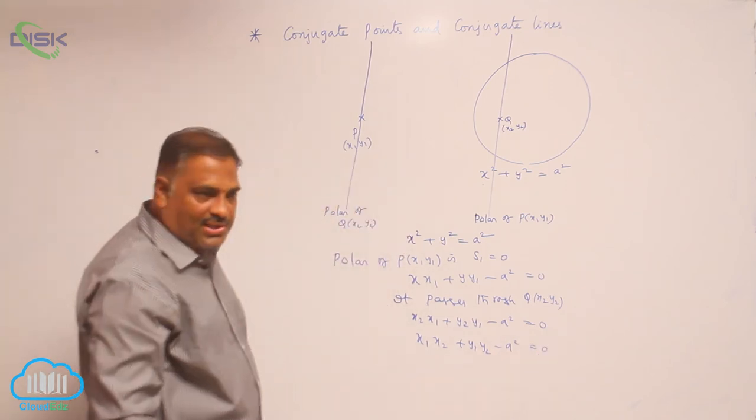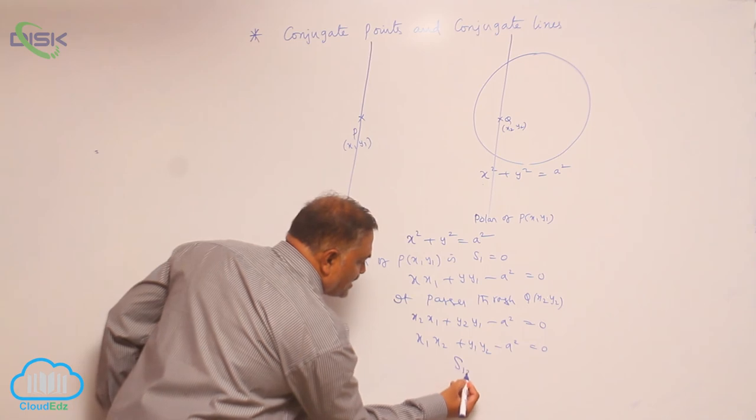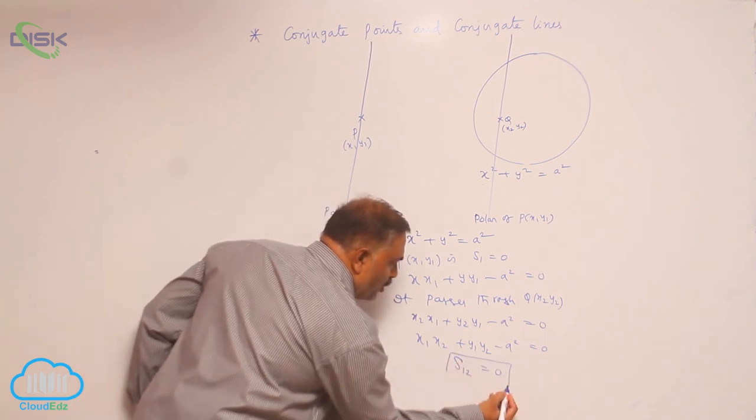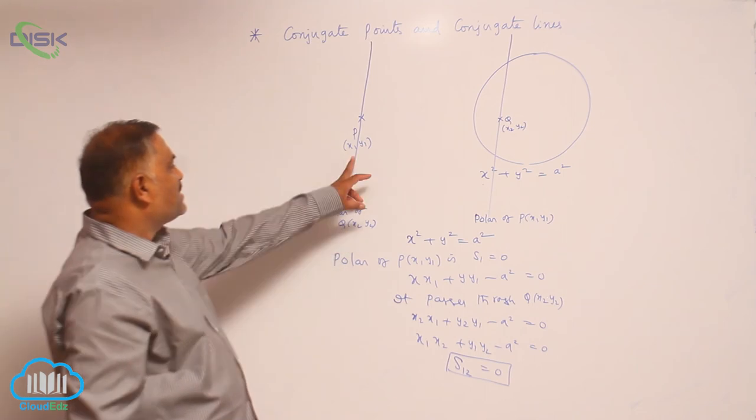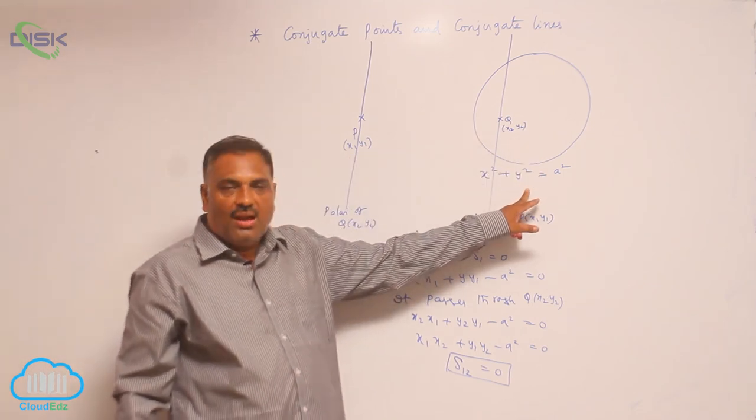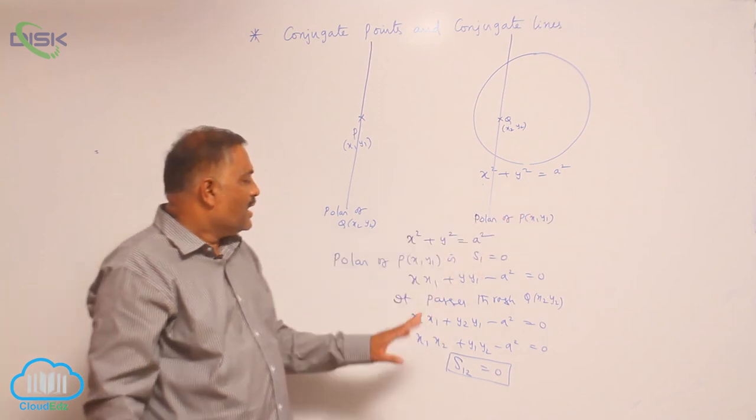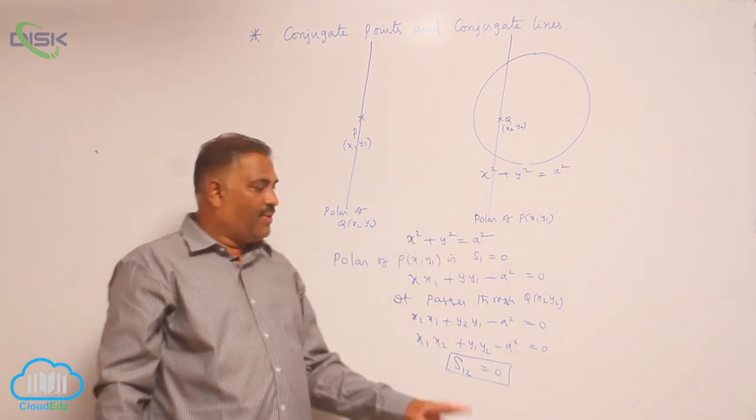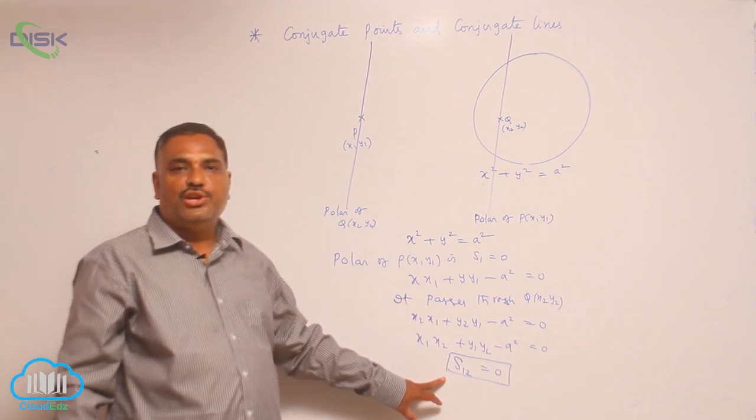As per the notations, this is s12 is equal to 0. So, two points p x1 y1 q x2 y2 with respect to the given circle are said to be conjugate points if and only if s12 is equal to 0.